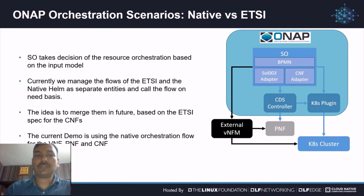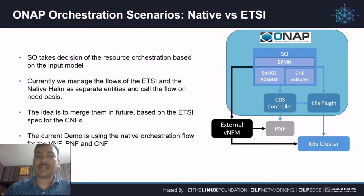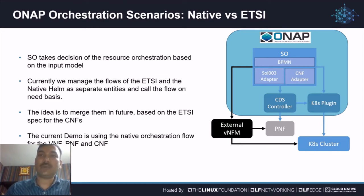Coming back to the scenarios ONAP can handle, there are two major things: ETSI alignment and native helm-based orchestration. Both are supported using current flows. What we want to demonstrate is the native flow, where free 5G core helm charts are demonstrated using our native flows, covering all three kinds of resources for end-to-end orchestration of a 5G core application. I'd like to hand over to my friend Lukasz from Orange.